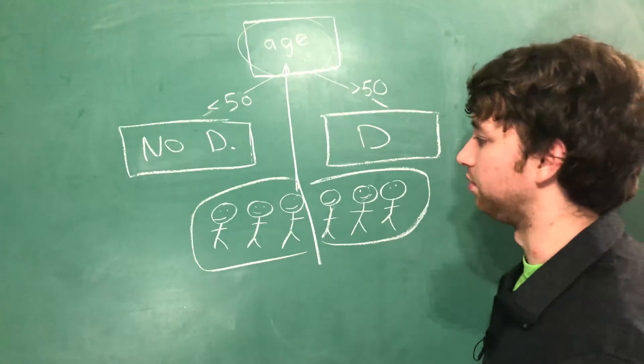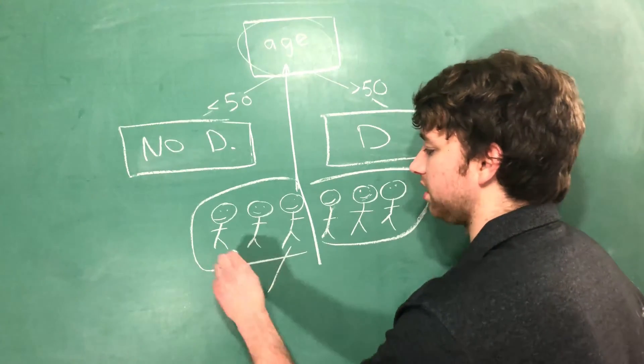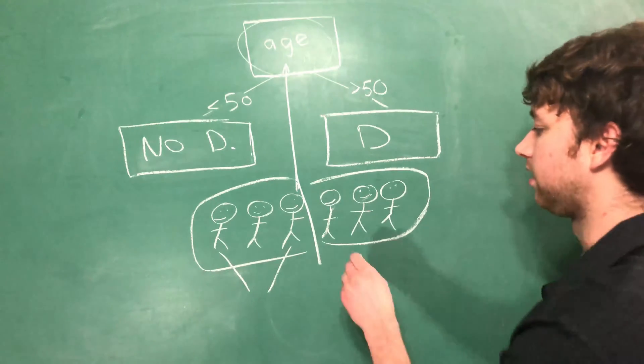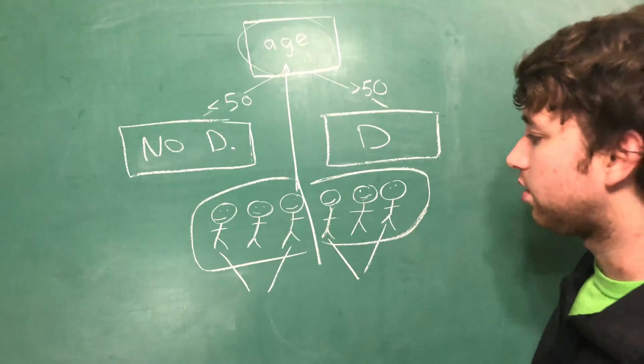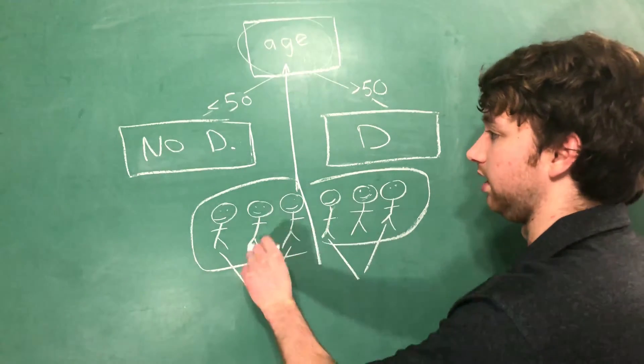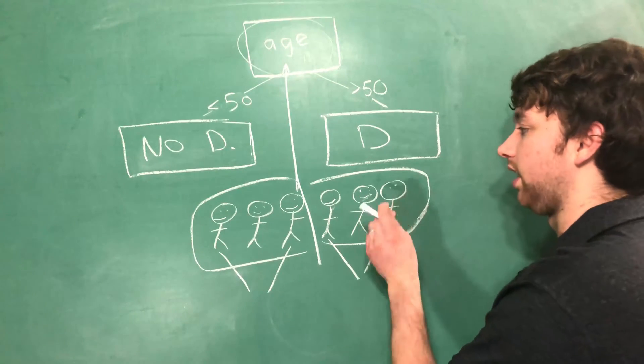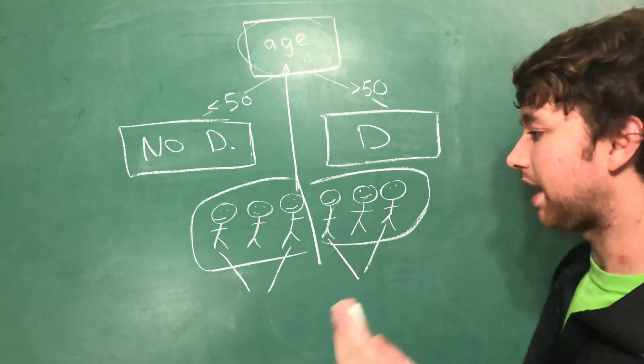A more realistic example though would split the data to where two of these people do not have diabetes and two of these people do have diabetes. So in that situation the majority have no diabetes on this side, and the majority have diabetes on this side. So you can see how it's a spectrum.